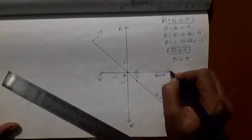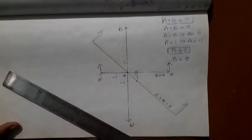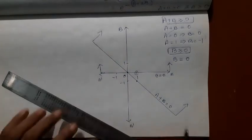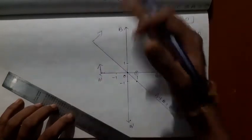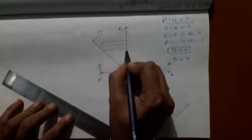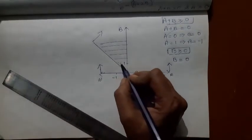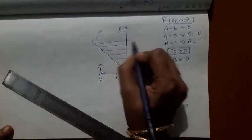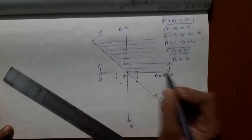B ≥ 0 corresponds to the upper half-plane above B = 0. The region of integration is where both conditions are satisfied — above the line A + B = 0 and above B = 0. This is your region of integration.